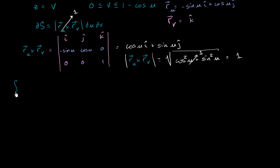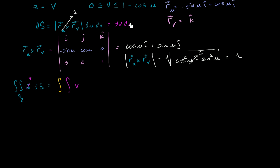We are ready to evaluate the surface integral over surface 2 of z ds. It's going to equal a double integral over u and v. I'm going to use two different colors for the different variables of integration — yellow for one and purple for the other. We're taking the integral of z, and in our parameterization z equals v, so we can write v there. We already saw that ds is the same thing as du dv, and I'm going to choose to integrate with respect to v first, doing dv on the inside and du on the outside.